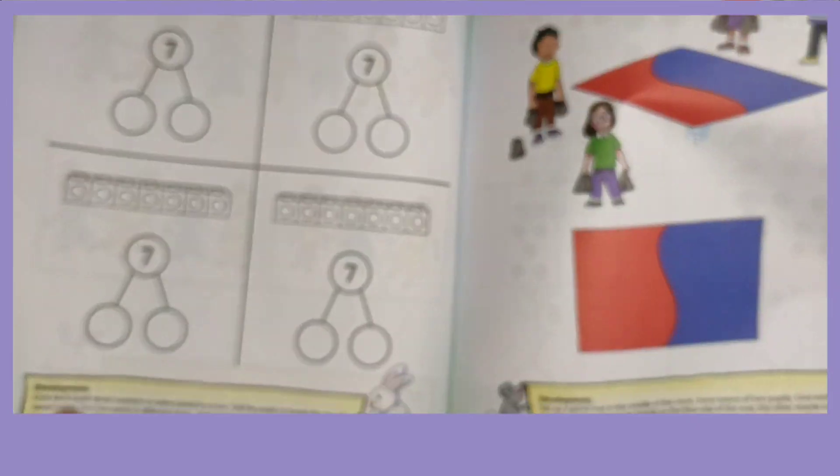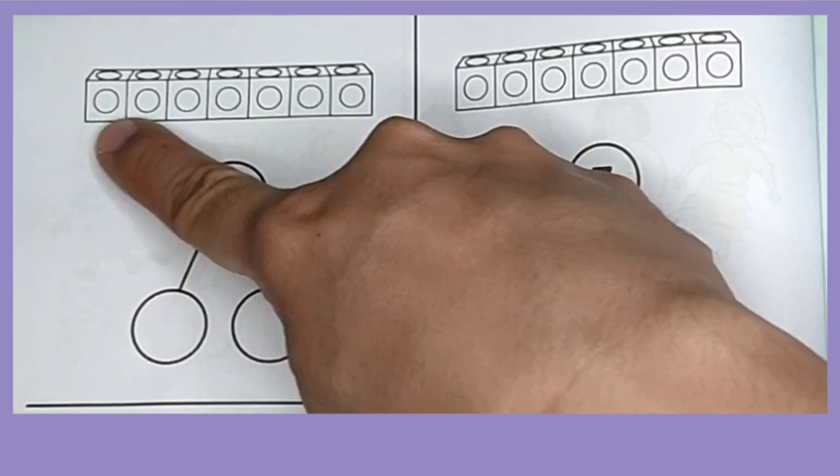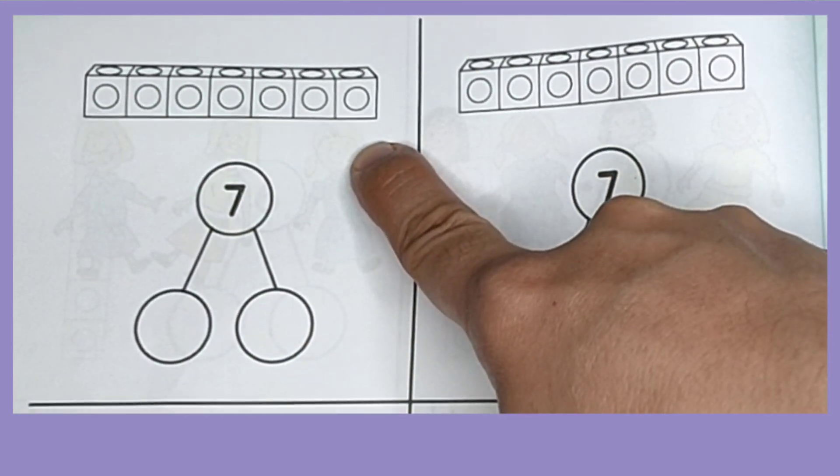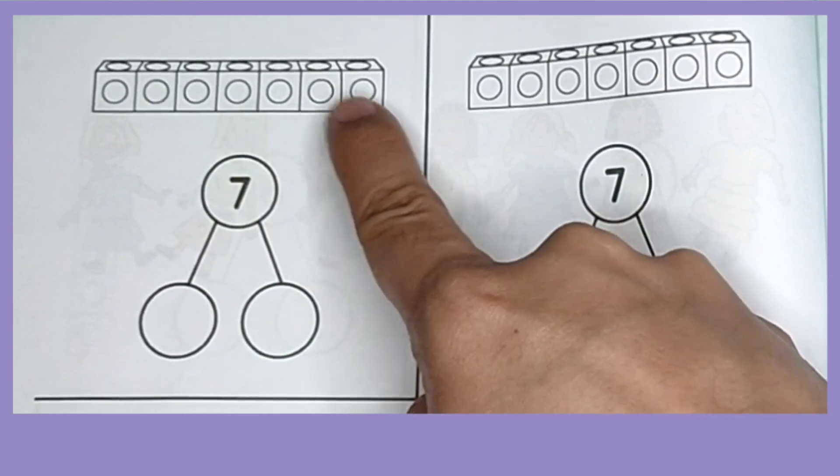Now, let's take a look at our textbook on page 42. Here, we have a set of cubes. Let's count them. One, two, three, four, five, six, seven. Seven cubes.